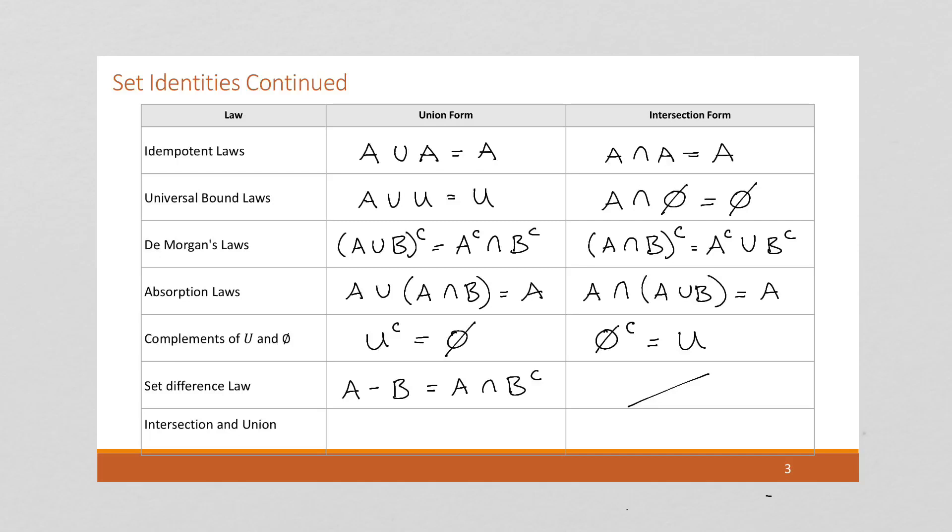And then finally, this last one, intersection and union, I'm going to write an if-then statement, conditional statement. I'm going to say if A is a subset of B, then, what does that mean? A is a subset of B means A is contained within B, so then A intersect B is going to equal A. And similarly, if A is a subset of B, then A union B is going to equal B, because A is contained within B.